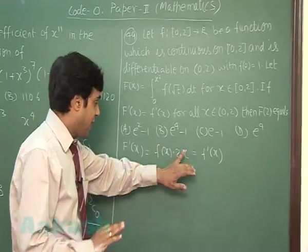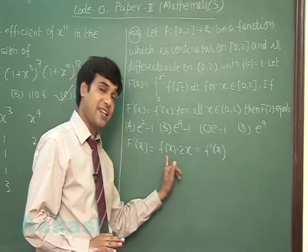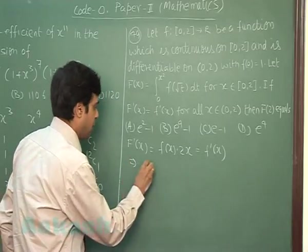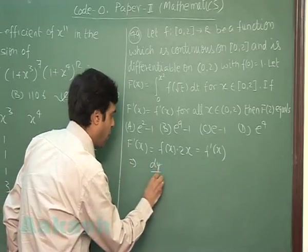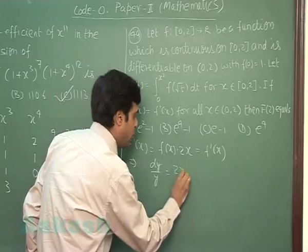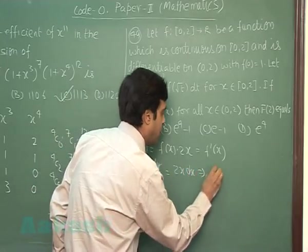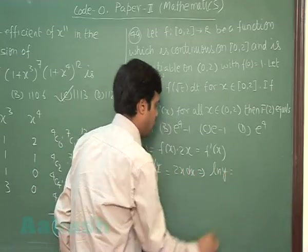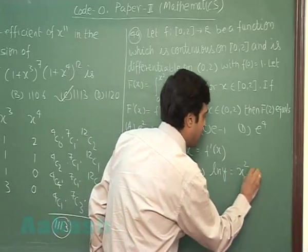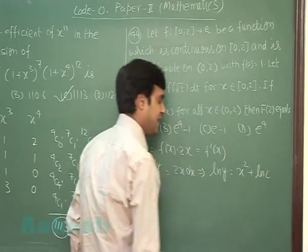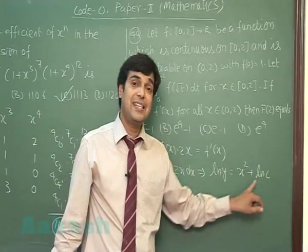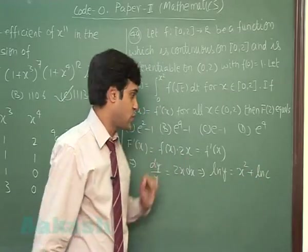So, if I see it as dy/dx, this is 2xy. dy upon y is equal to 2x dx or log y equals x² plus some constant say log c.